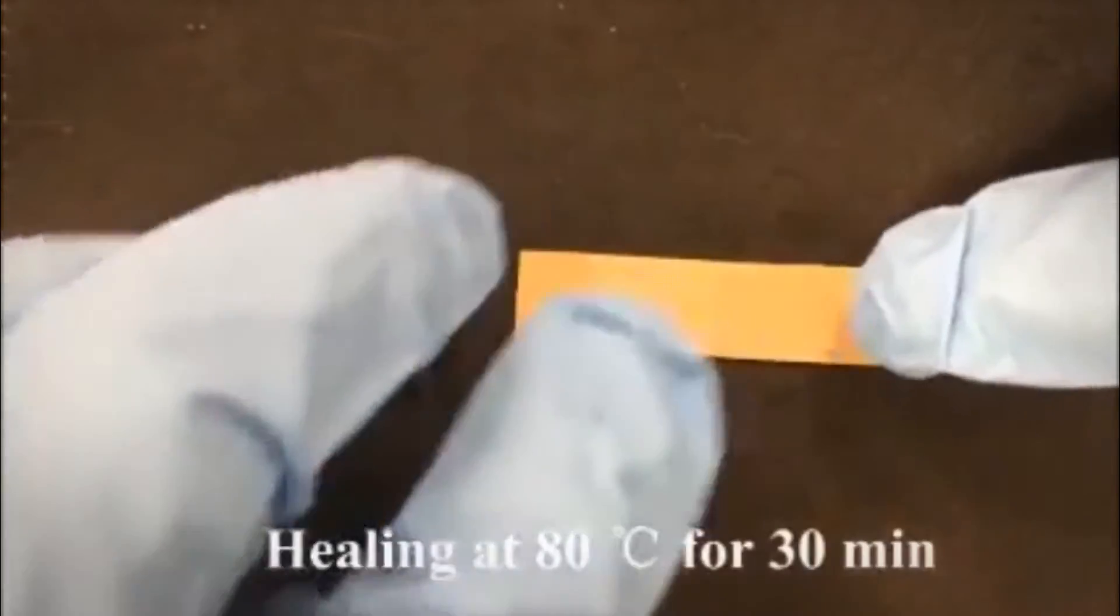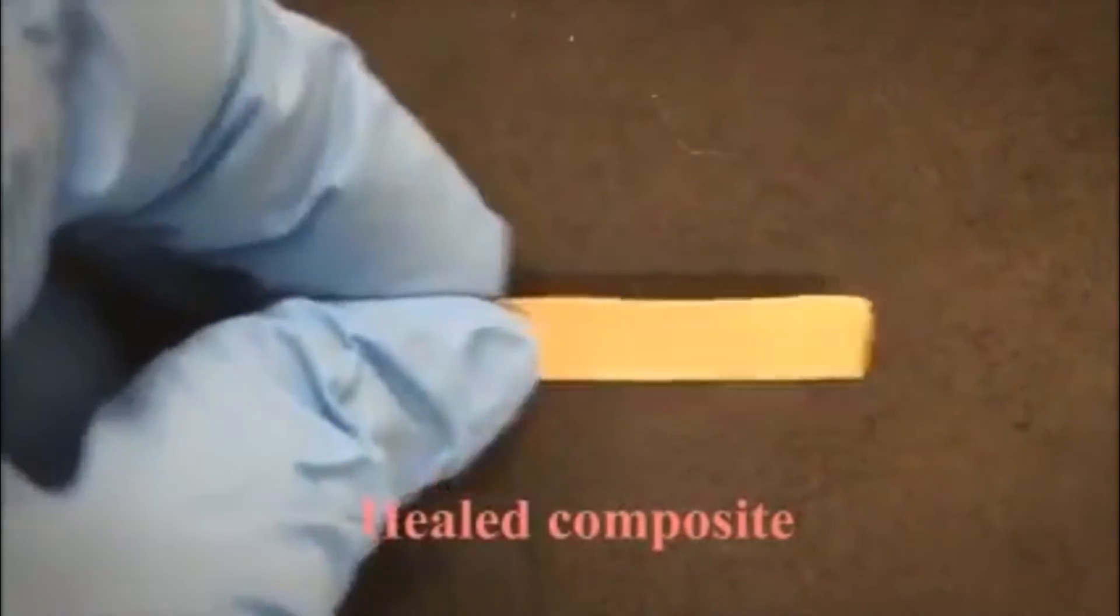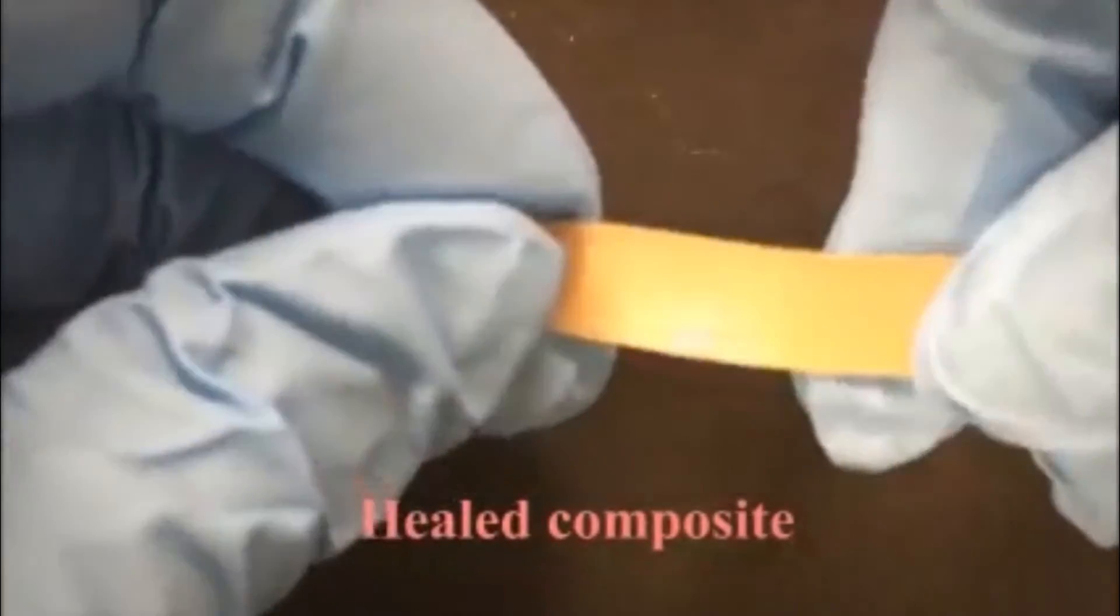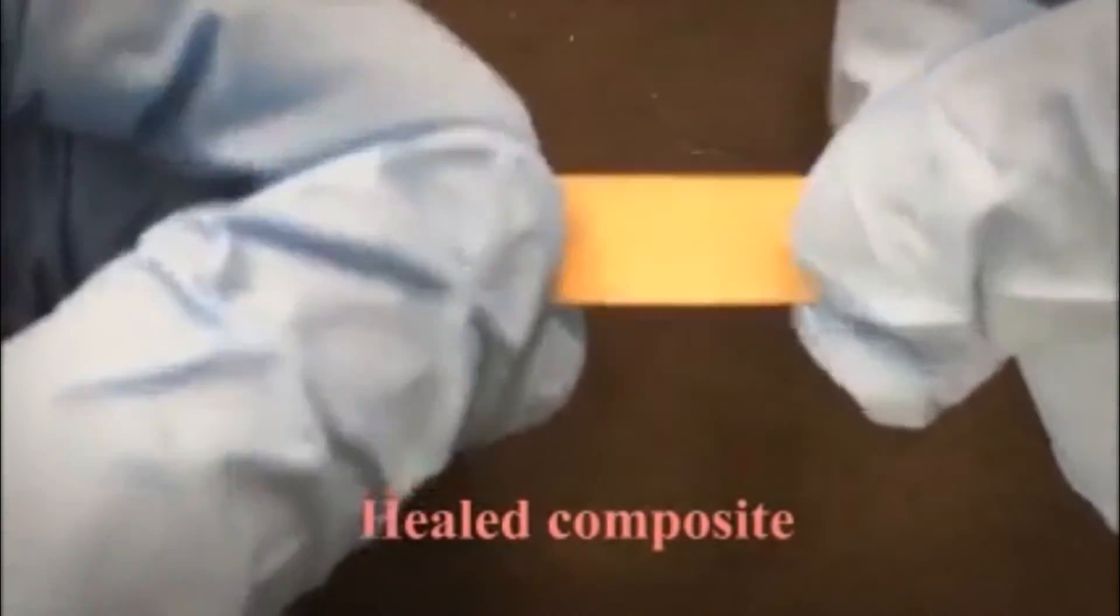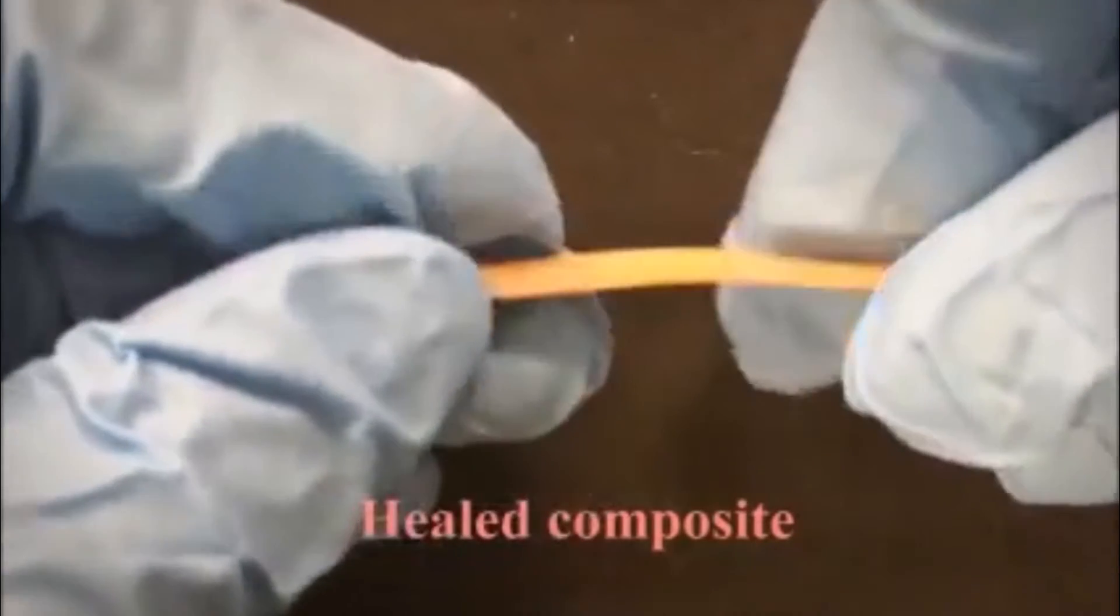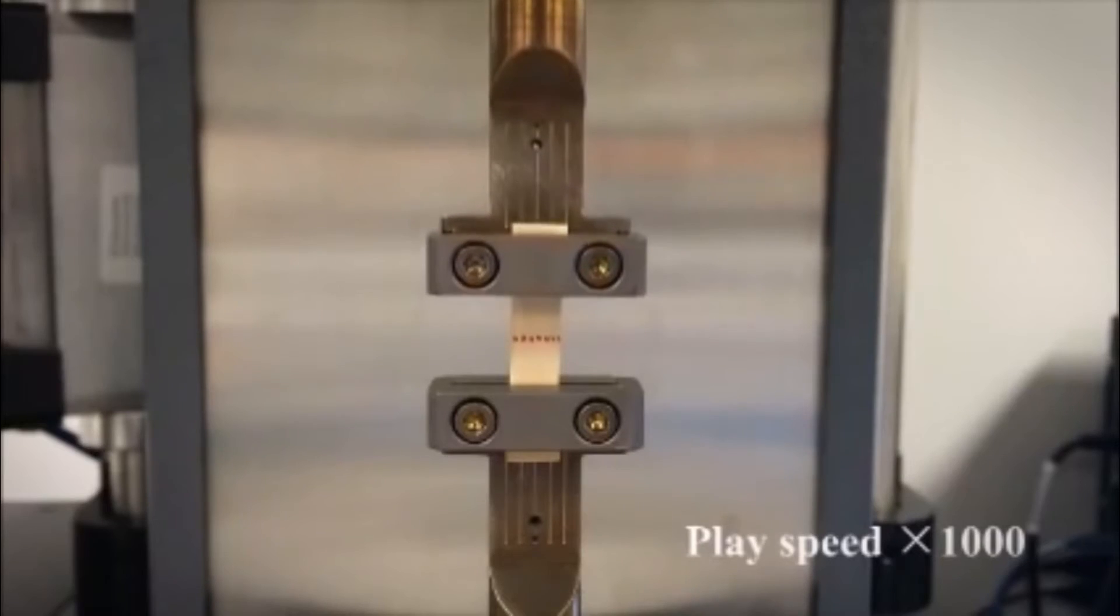Researchers have shown the possibilities of the material by cutting it in half and demonstrating its self-repairing properties. When the two halves of the material were brought close to each other, an electrostatic charge pulled them together, restoring the hydrogen bonds and healing the material.